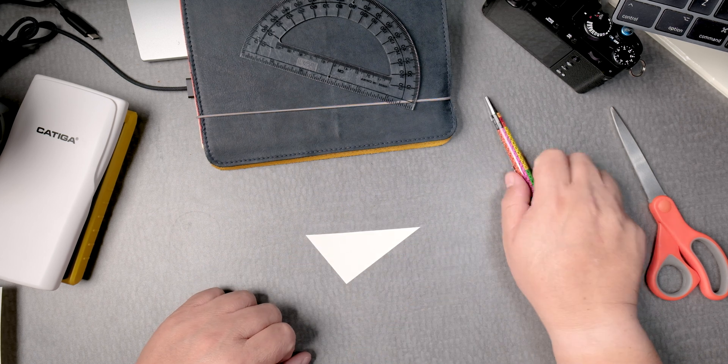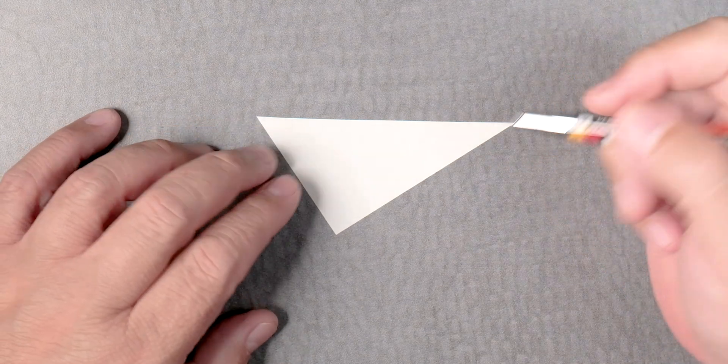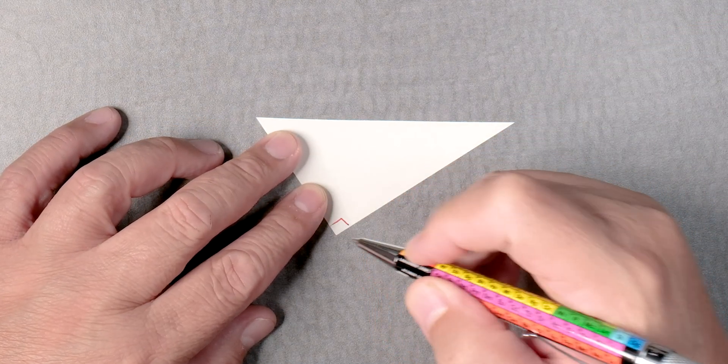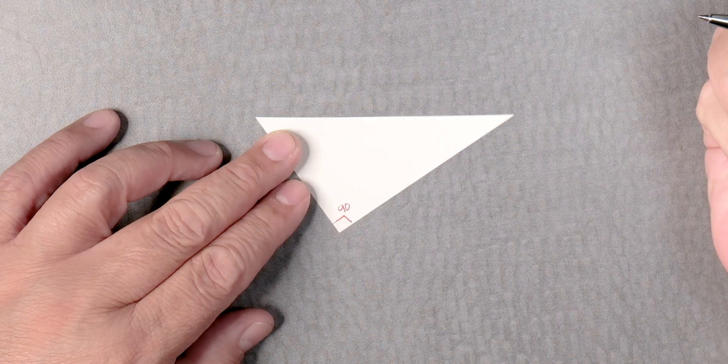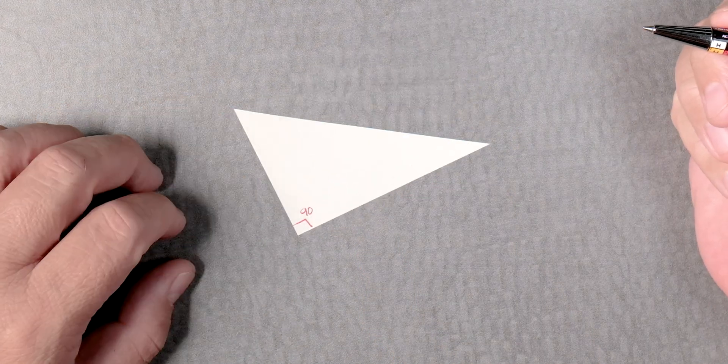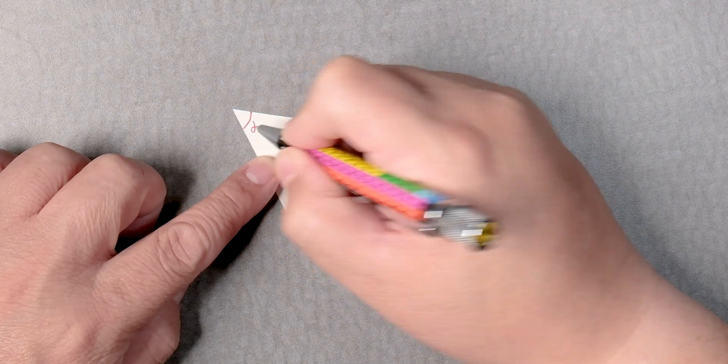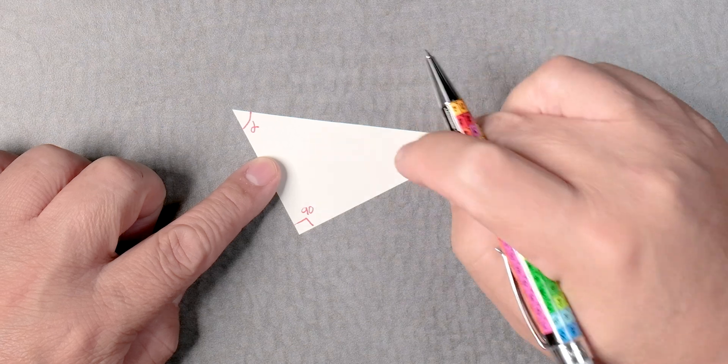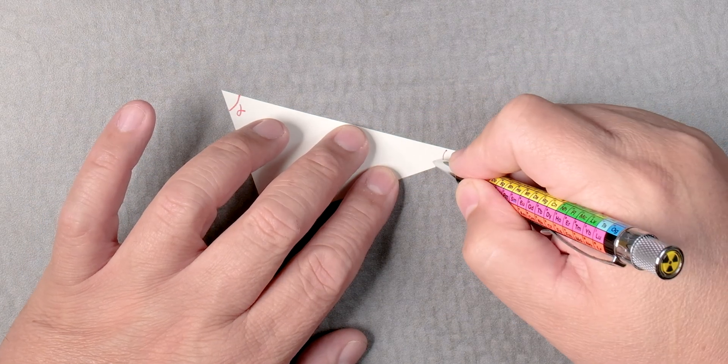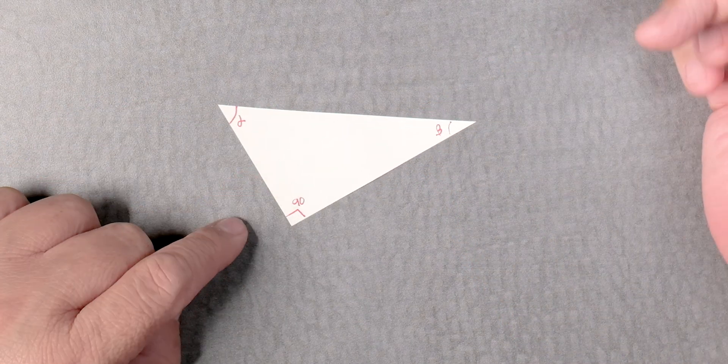See that? Now, a fascinating thing about a triangle is that this right here is 90 degrees. Over here, I really don't know what this angle is. We'll call it alpha. And this one, I don't know what this angle is. We'll call it beta.